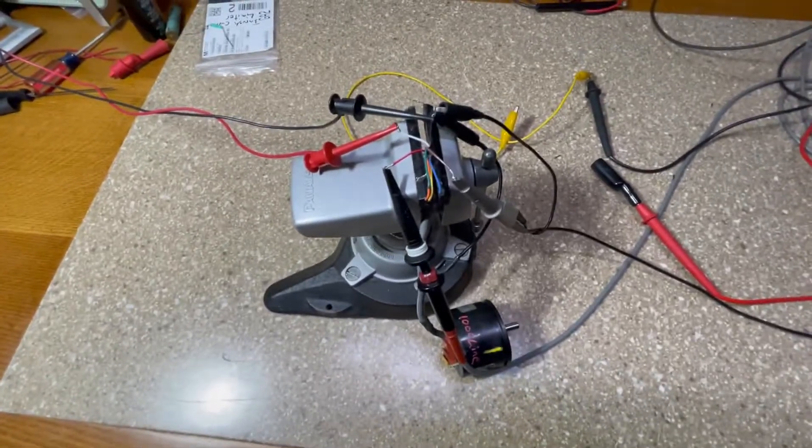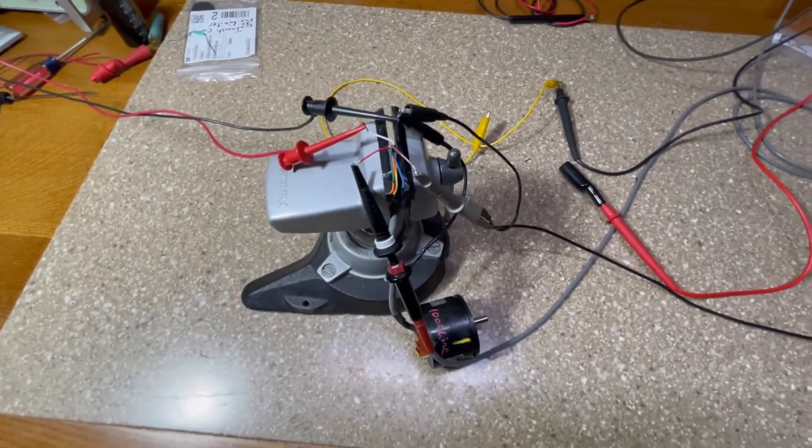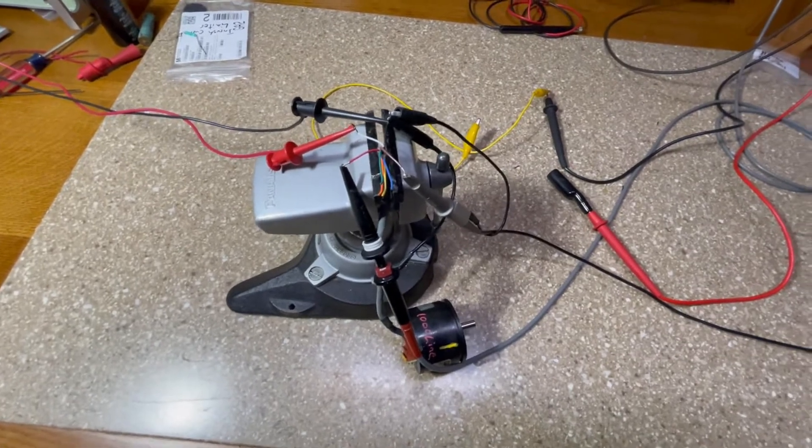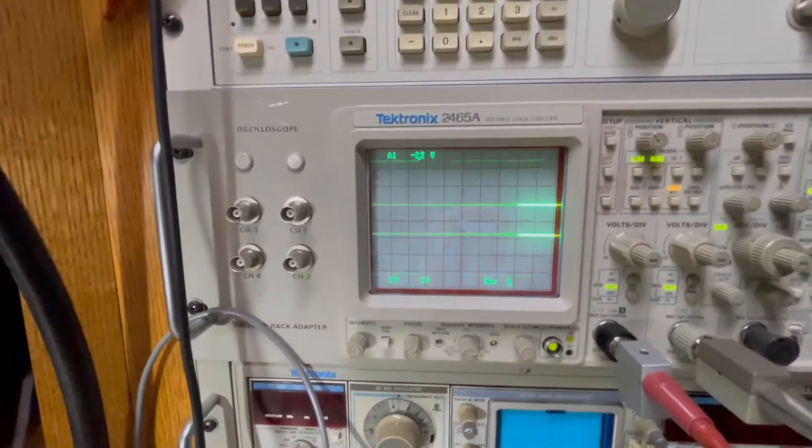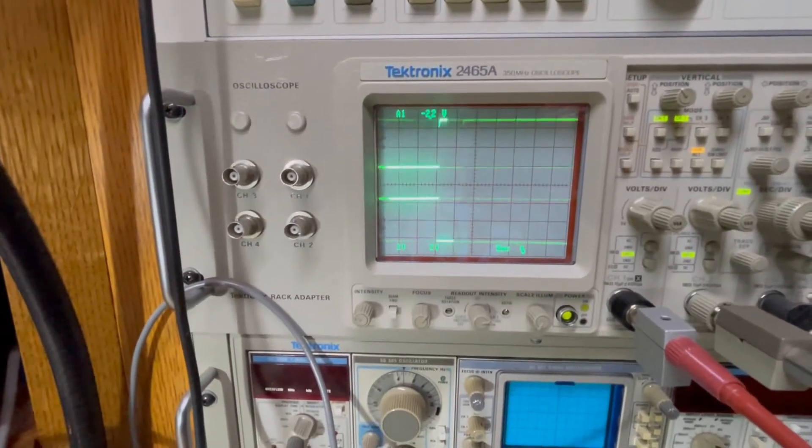If you have an oscilloscope, you can connect one channel of the oscilloscope to both the A and the A-not, or the B and B-not, and then when you turn the shaft, you'll be able to see the square wave output.